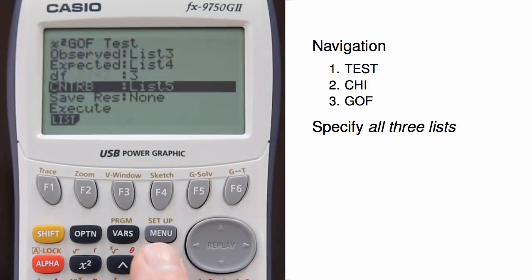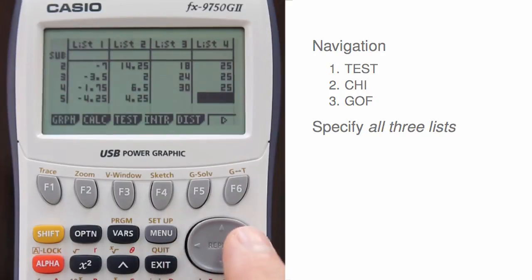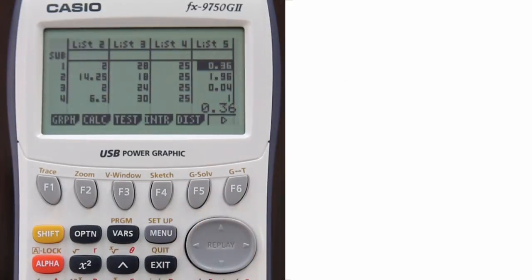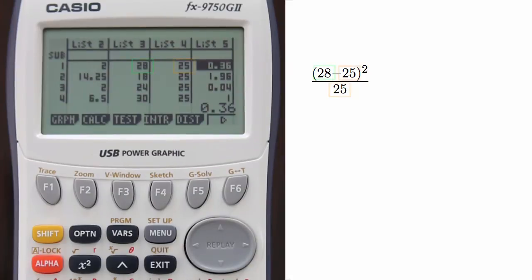Let's hop out to the list view to see the contribution list. For example, here the contribution of the first bin was 0.36. We can show that by taking 28 minus 25, square that result, and then divide by 25, which is 0.36.